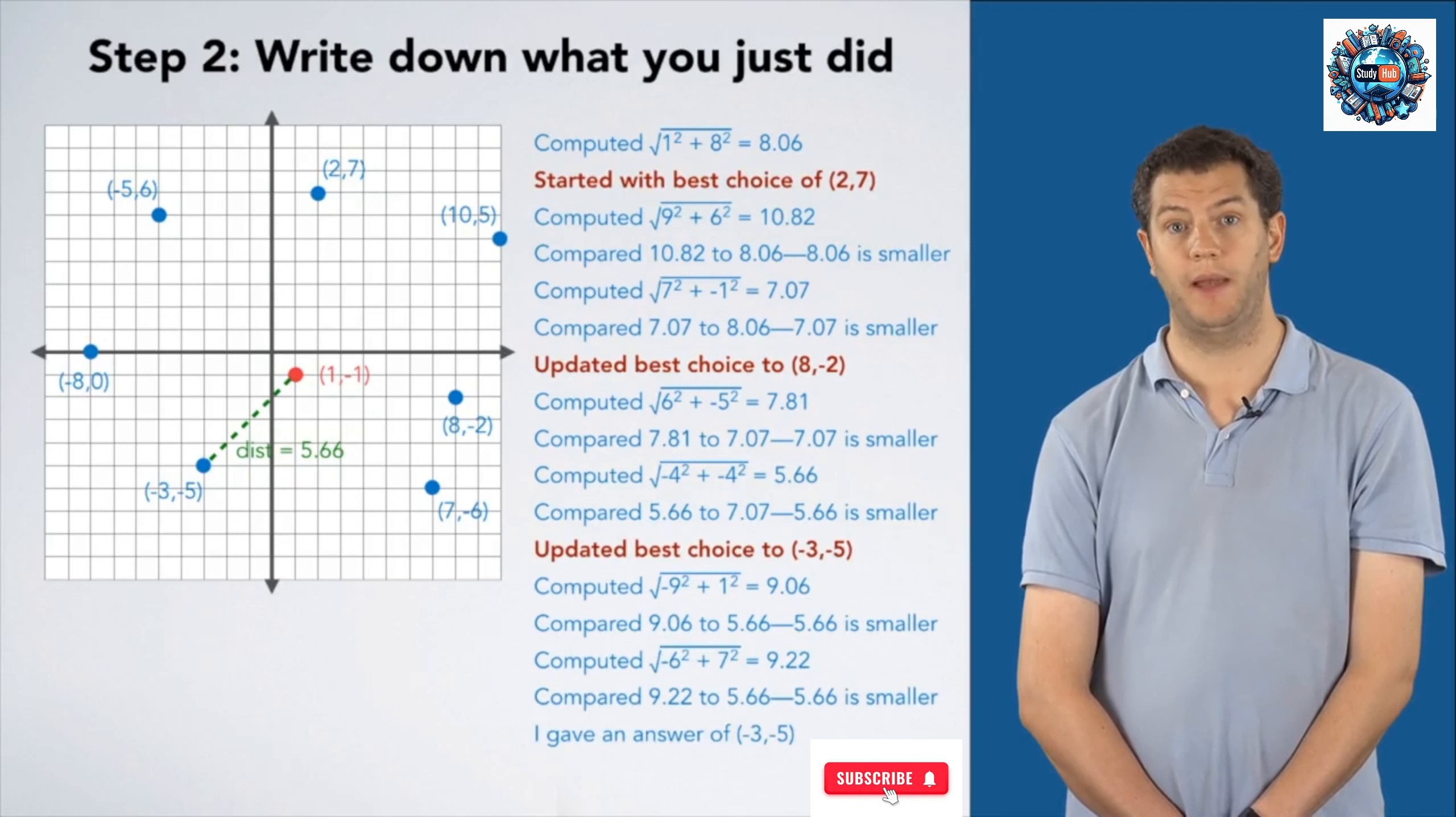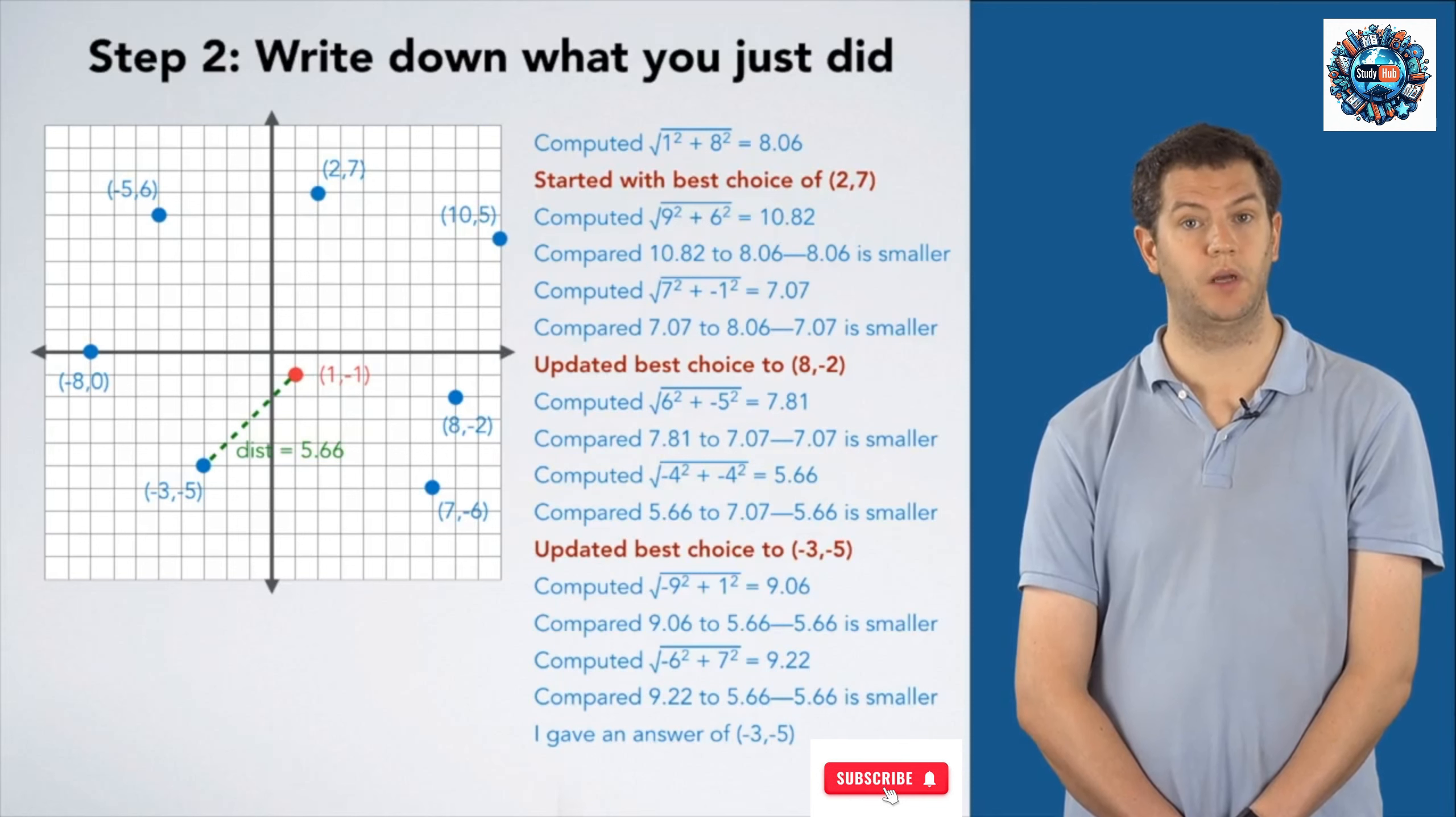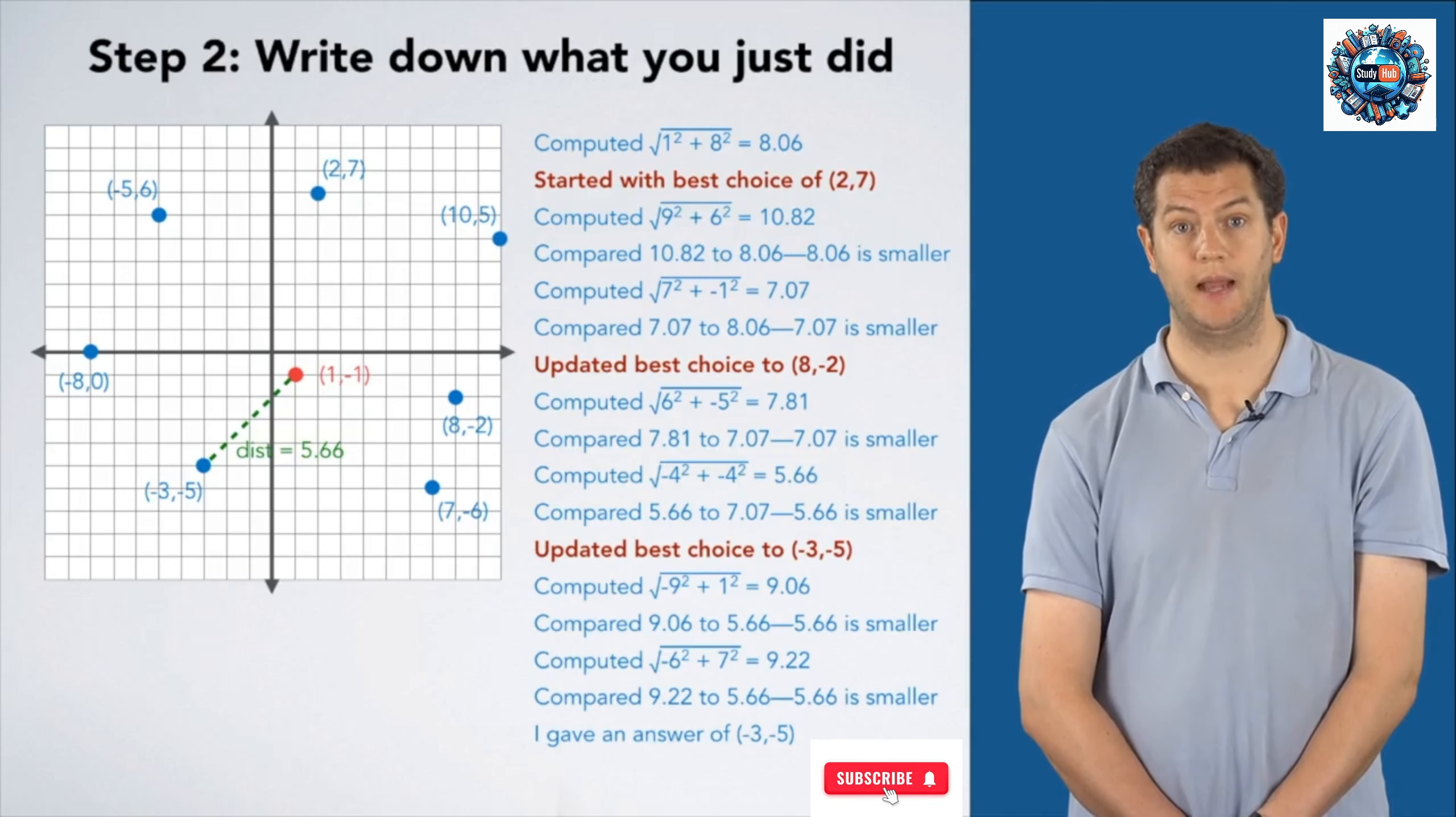We start with a best choice of (2,7). When we got to (8,2) and decided 7.07 was smaller, we updated our closest point to (8,2). When we got to (-3,-5) and found that 5.66 was smaller, we updated our best choice to (-3,-5).